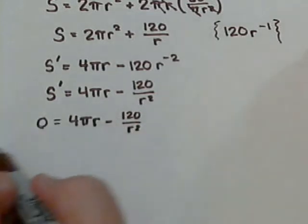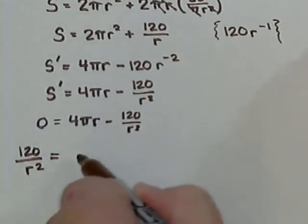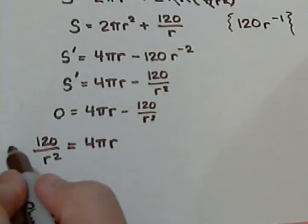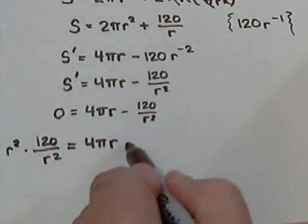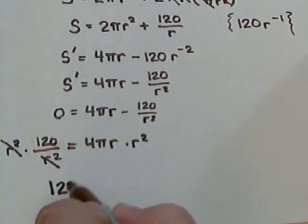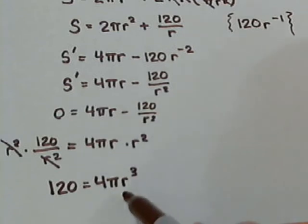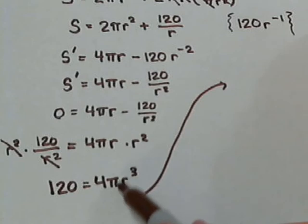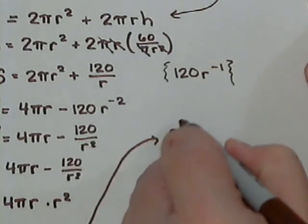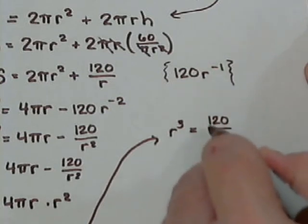Let's move the 120 to the other side. That will make it positive. So 120 over r squared equals 4 pi r. Let's multiply both sides by r squared to get rid of our fraction. That will leave us with 120 equals 4 pi r to the third. Let's move up here. We want to get r to the third by itself, so we're going to divide by 4 pi. So that gives us r to the third equals 120 divided by 4 pi.